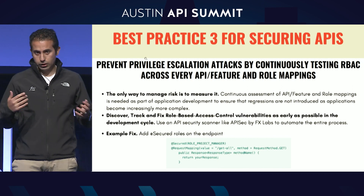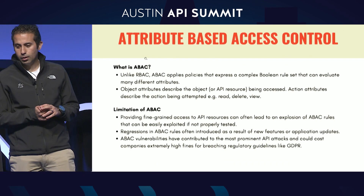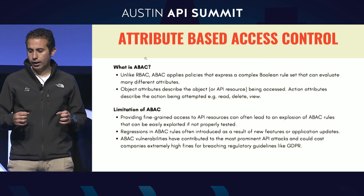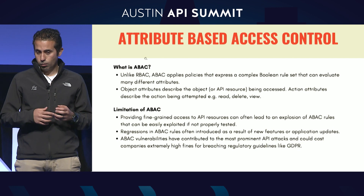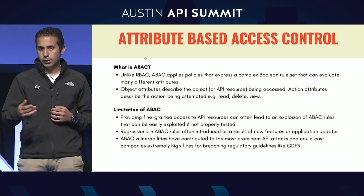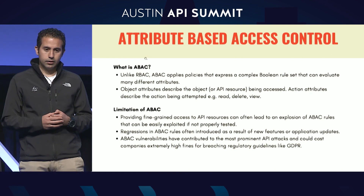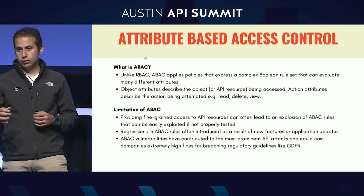You can use an API security scanning solution like the one we provide to automate that entire process. Attribute-based access control is about applying policies to control access. There are different types of attributes: an object attribute describes what you're trying to access, like an API resource; an action attribute describes the action you're attempting, like read, update, or delete. Just like RBAC, it's very susceptible to regressions, because it's extremely hard to keep track of all the policies controlling access to your API resources. As you introduce or change API endpoints, there's a high tendency you'll introduce changes that allow hackers unauthorized access.